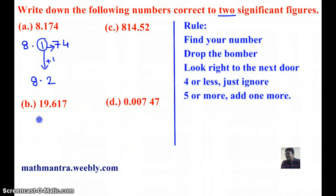Next, 19.617. The first significant figure is 1 and the second significant figure is 9. And the next number is 6, which is of course more than 5. So I must add 1 to 9. If I add 1 to 9, I get my answer as 20.